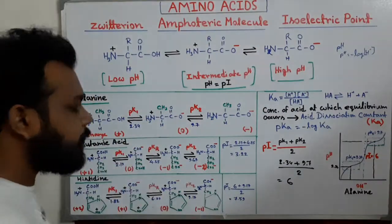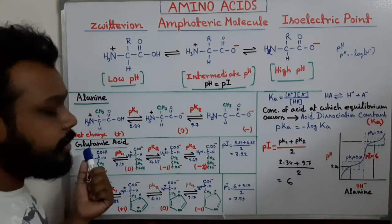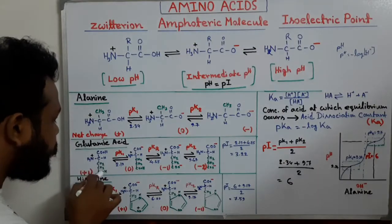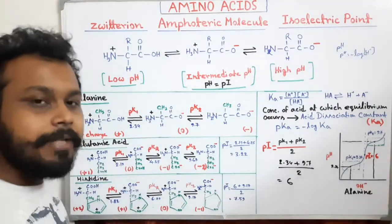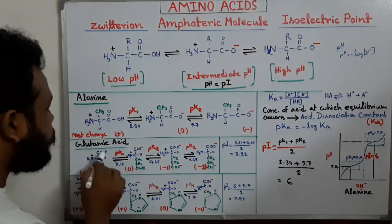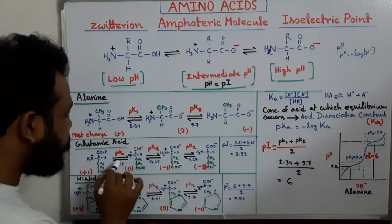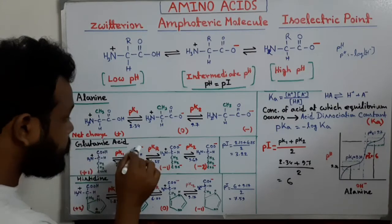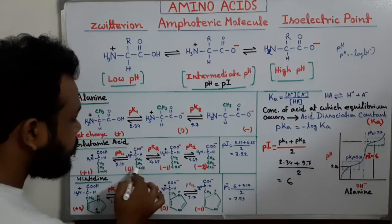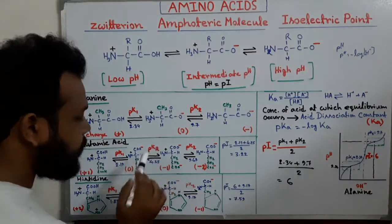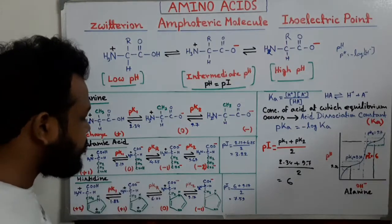Next is glutamic acid. Glutamic acid is a negatively charged amino acid because its side chain also contains a COOH group. At low pH it carries a positive charge. When we raise the pH, the first hydrogen is released from the COOH group at pK1 = 2.19. Then the next hydrogen is released from the side chain COOH group — this is called pKR (R meaning the side chain) — at pKR = 4.25.